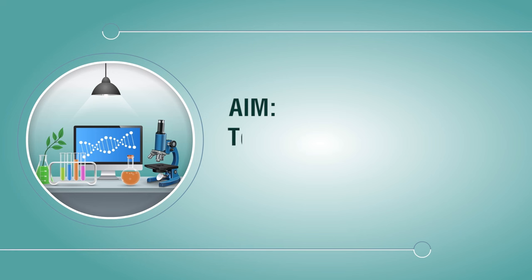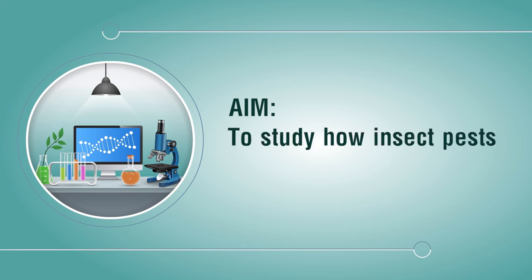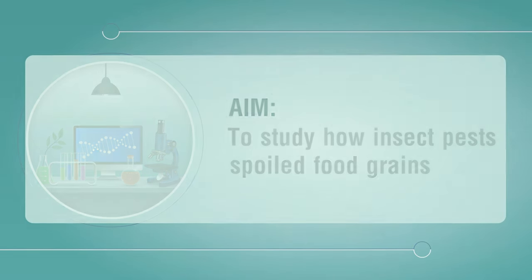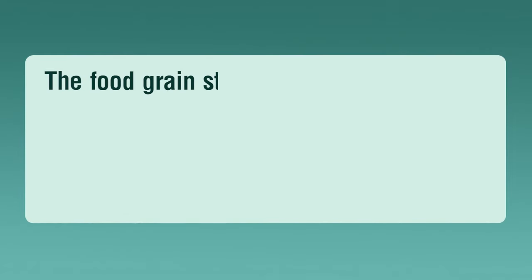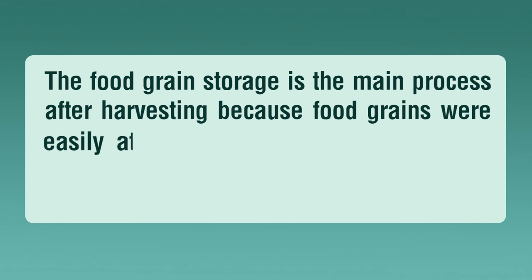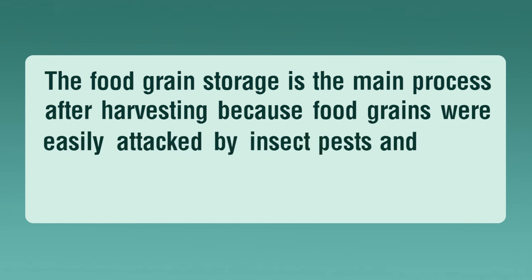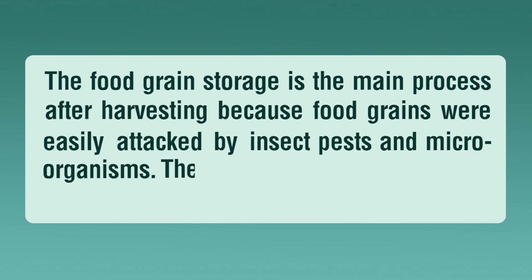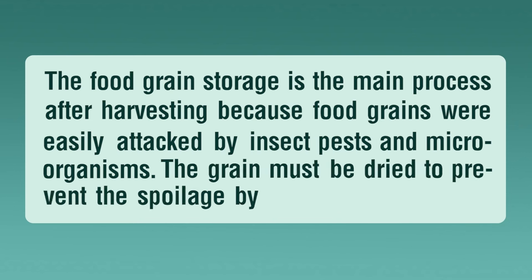We aim to study how insect pests spoil food grains. Food grain storage is the main process after harvesting, because food grains are easily attacked by insect pests and microorganisms. The grain must be dried to prevent spoilage by organisms.